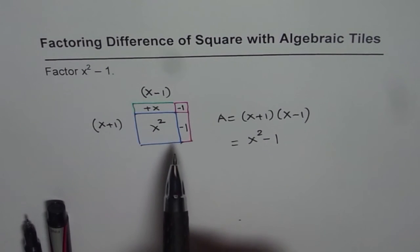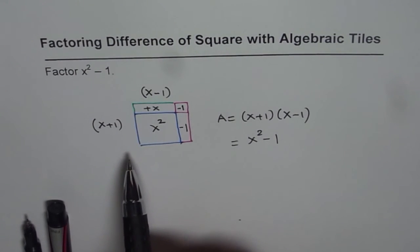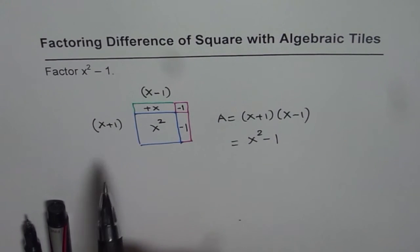In doing so the dimensions of the rectangle, in this case the square, will provide us with the factoring of the binomial difference of squares.